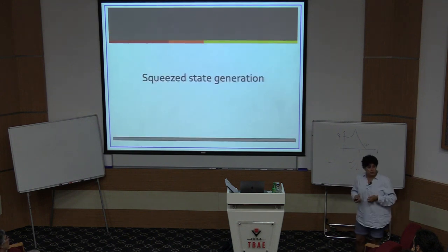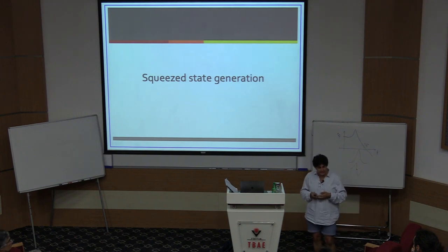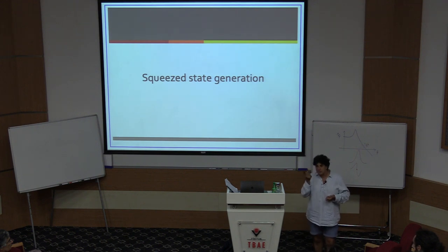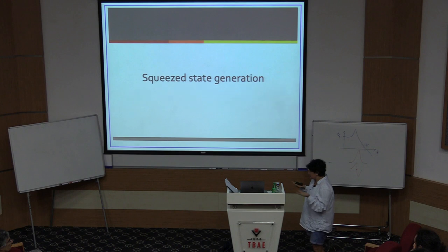So indeed we do that. We want to make a squeezed vacuum state. We're going to go in a lab and squeeze vacuum fluctuations. So how do we squeeze a photon state? We need to simultaneously de-amplify the noise in one quadrature whilst amplifying the noise in the other quadrature. I can't use just an ordinary amplifier, because that amplifier will just make the whole circle of noise grow bigger — it amplifies everything.